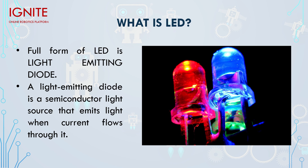Let's start with the LED. The full form of LED is Light Emitting Diode — it is a diode which emits light. A diode is basically a semiconductor device which allows the flow of current in only one direction. So a light emitting diode is a semiconductor light source that emits light when current flows through it.